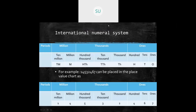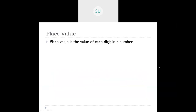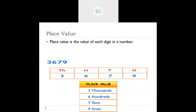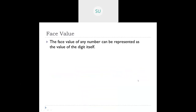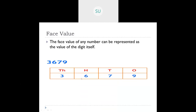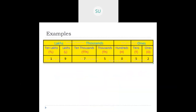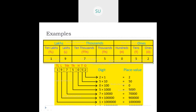We studied face value, place value, and how to compare numbers. Place value is the value of each digit based on its position. For example, in the number 3679: place value of 3 is three thousand, 6 is six hundred, 7 is seventy, and 9 is nine. Face value of any digit is the value of the digit itself, so face value of 3 is 3, 6 is 6, 7 is 7, and 9 is 9.